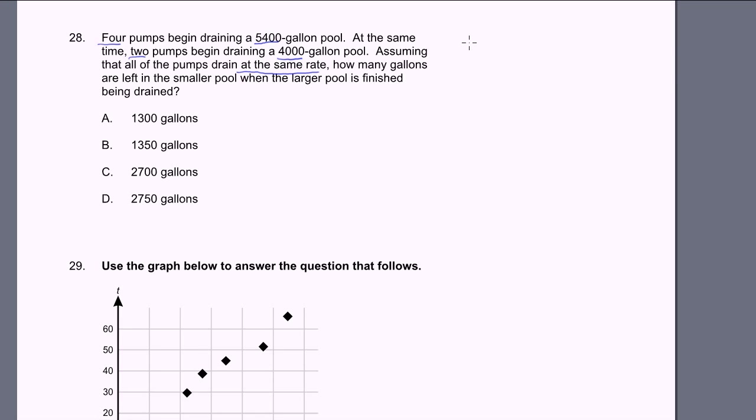Let's just assume that each pump drains at x gallons per minute. So four pumps will drain at 4x gallons per minute. Two pumps will drain at 2x gallons a minute. So how many minutes does it take to drain the 5,400 gallon pool?